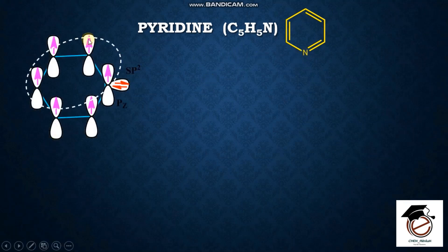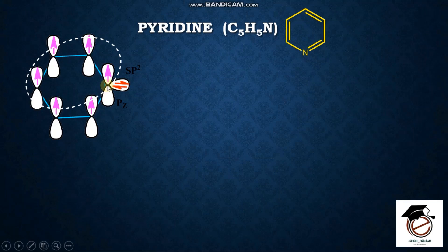M is called Molecular Orbital. This is the Molecular Orbital Diagram. The nitrogen is sp2 hybridized. Carbon is also sp2 hybridized. This is called the sp2 hybridized orbital.